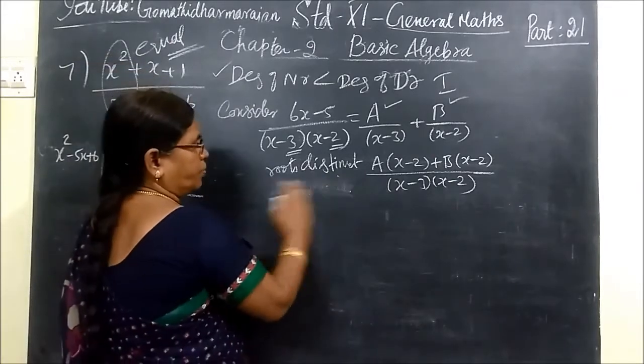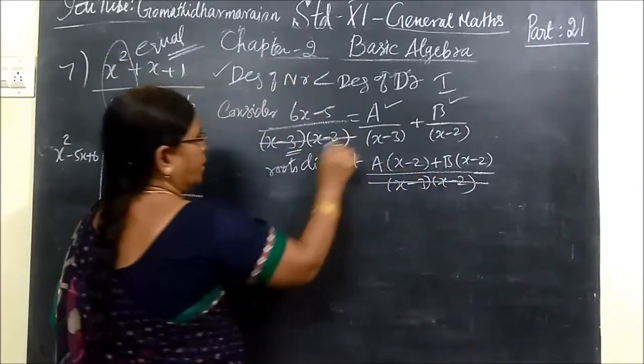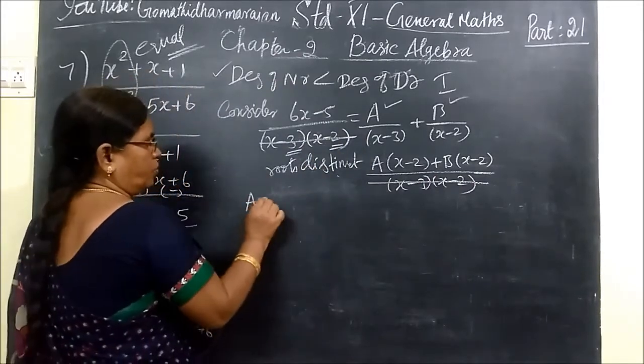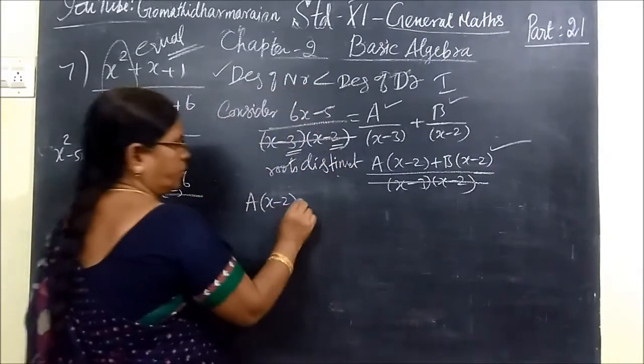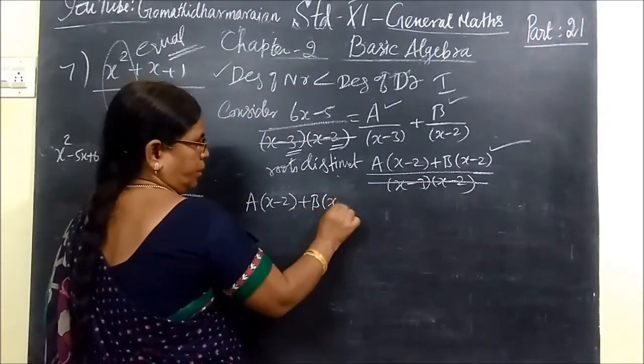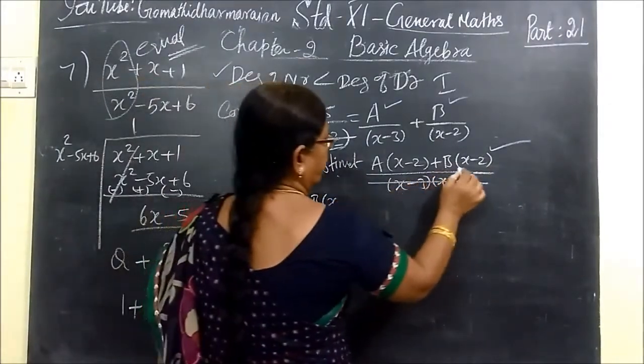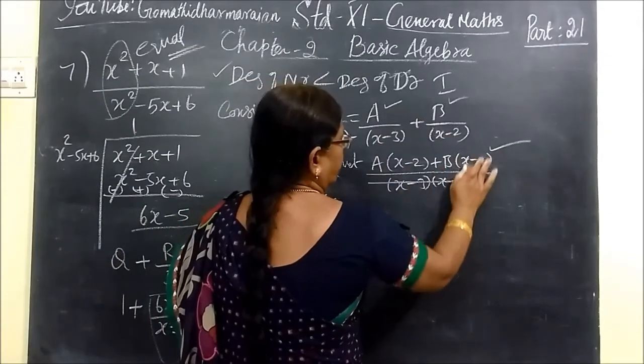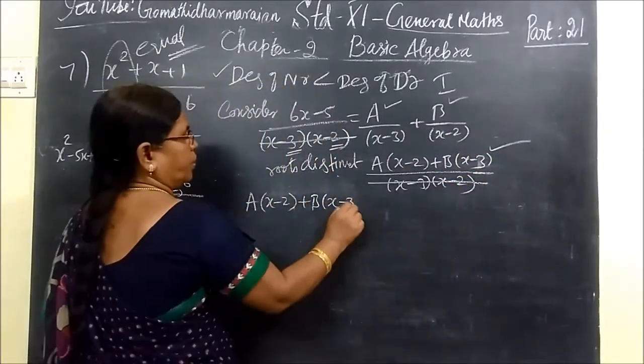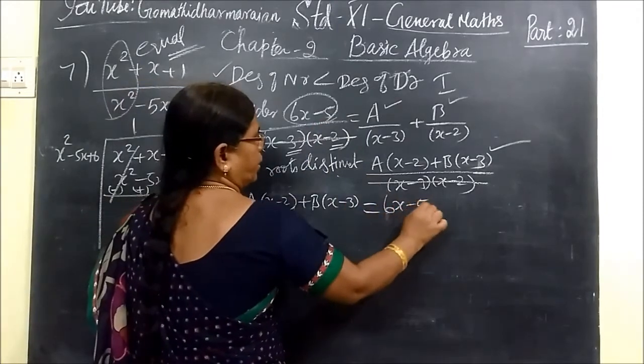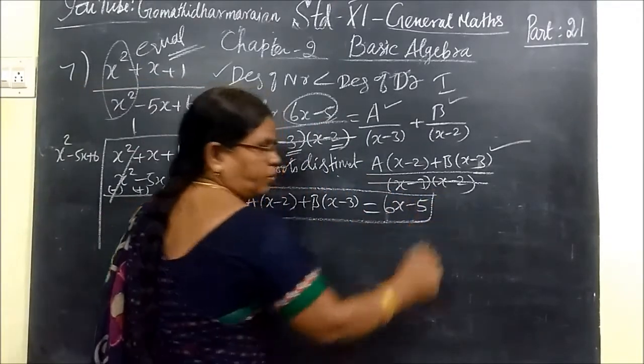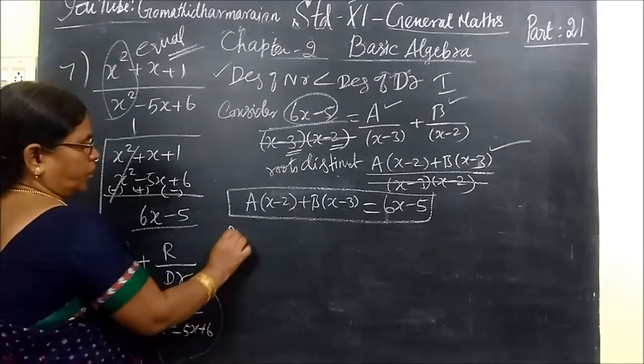If it is equal means that is the second type. So in that line, here we go, cancel each. Now you write A bracket, this one you are writing, x minus 2. Then B bracket, x minus 3. Equal to numerator, 6x minus 5. That one we are writing.